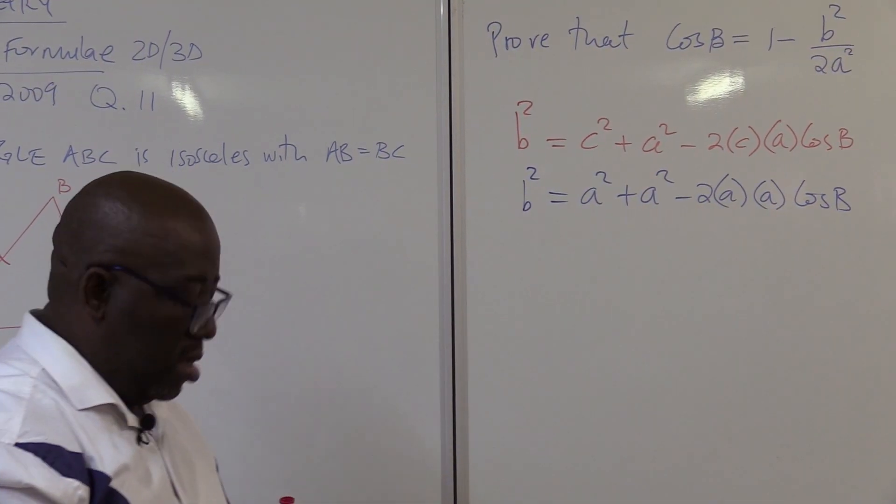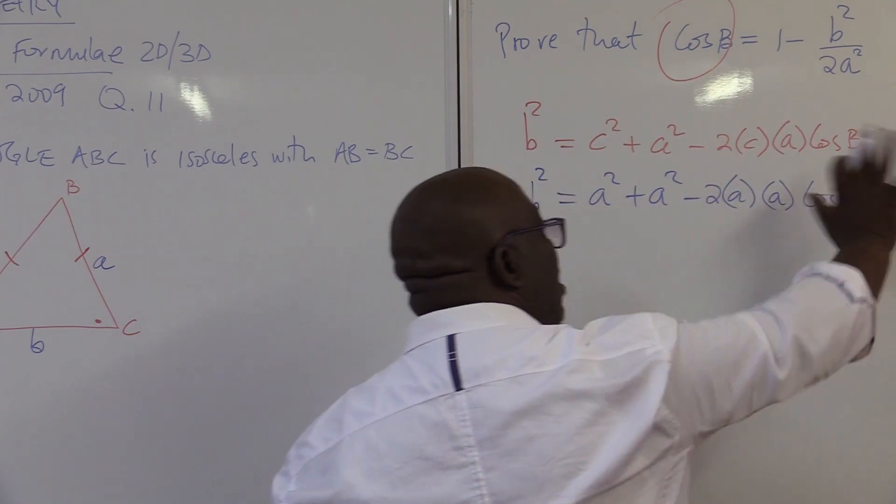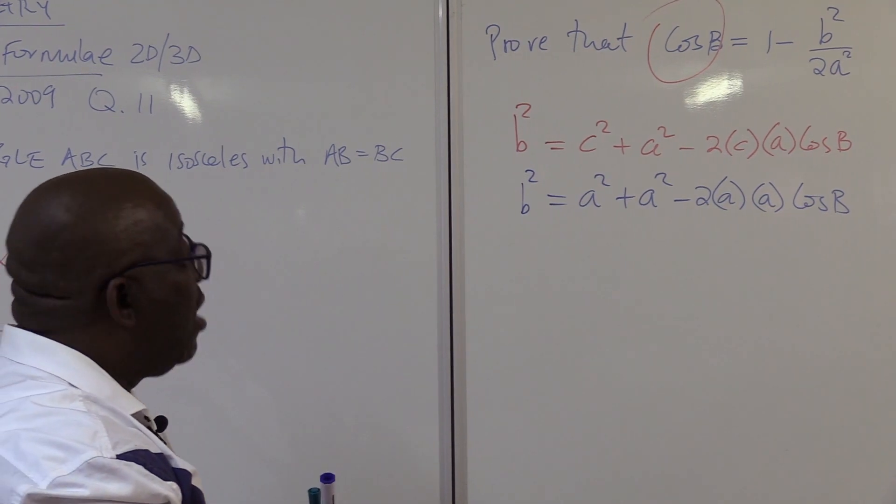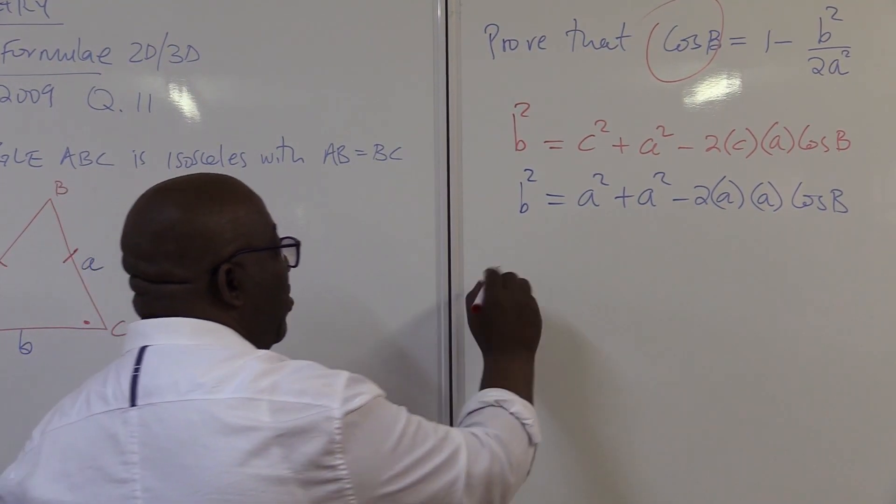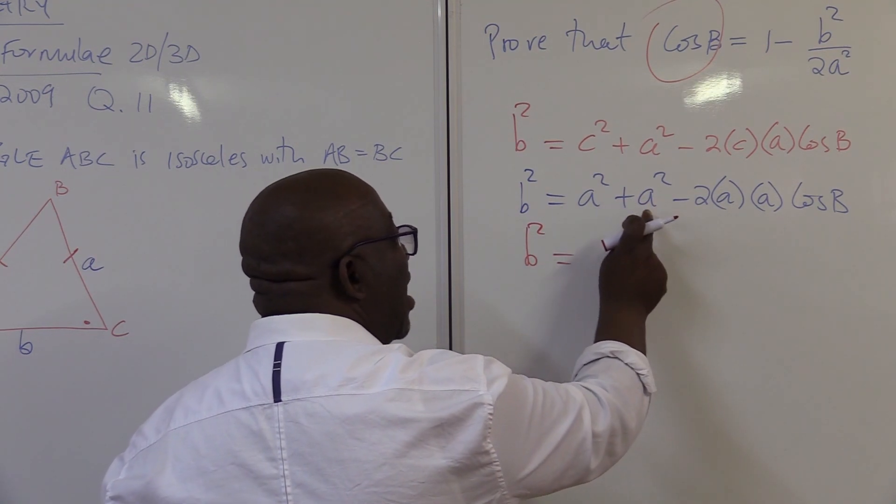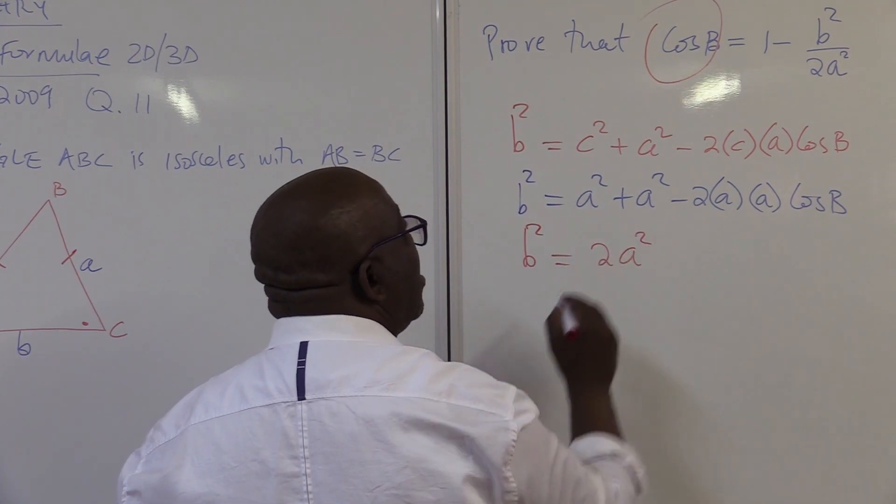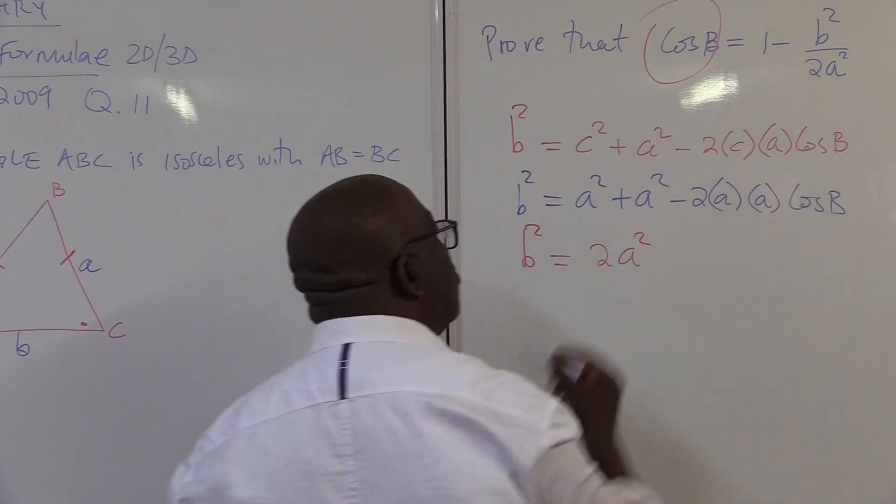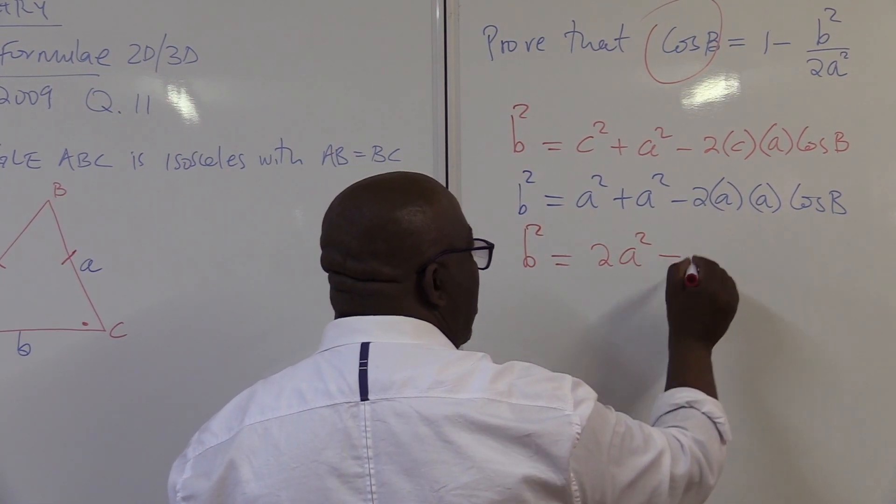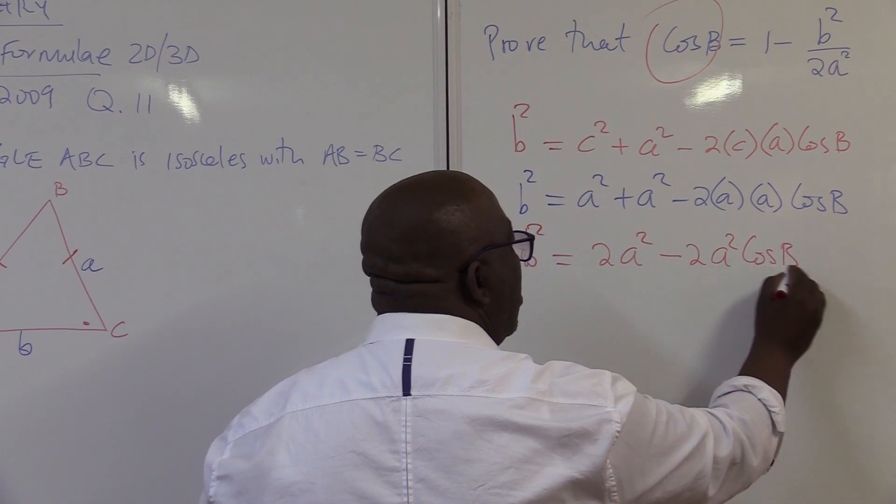Right. I'm looking for cosine of B, and I see that it is on this side. So I've got to take it to the other side. Let me just clean it first. I've got B squared equals to, what is A squared plus A squared? Two of them. I've got 2A squared. Ah, it's starting to show up. 2A squared minus, what is A times A? It's another 2A squared cos B. This is what we have.